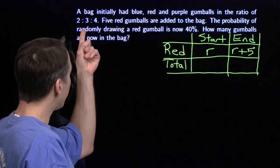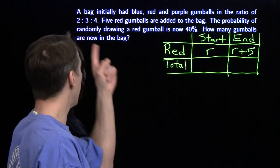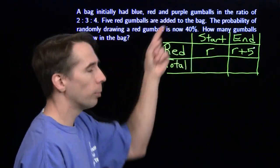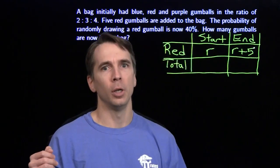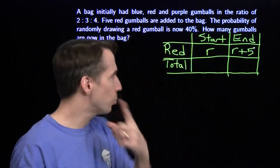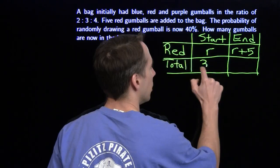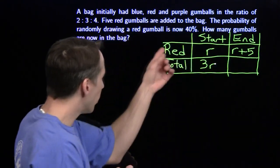And we can relate it to the total number of gumballs. With the ratio here, we're told that for every three red gumballs, we have two blue and four purple. That means for every three red gumballs, we have 2 plus 3 plus 4 equals 9 total. So the total number is three times the number of red gumballs we have.